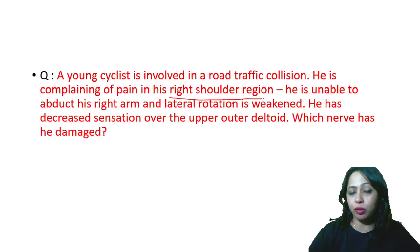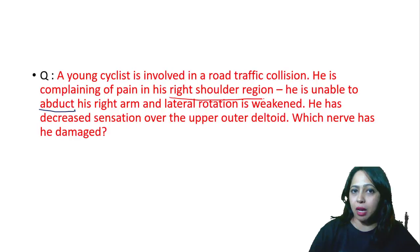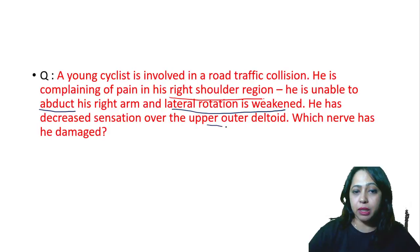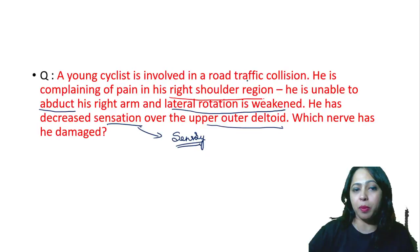Highlight these key findings: he is unable to abduct his right arm, lateral rotation has become very weak, and he has decreased sensation over the upper outer deltoid area. You must remember the sensory supply. What has gone wrong to cause this loss of sensation, and which nerve has been damaged? The pain is only in the shoulder region — not the shaft or elbow — so concentrate only on the shoulder region.